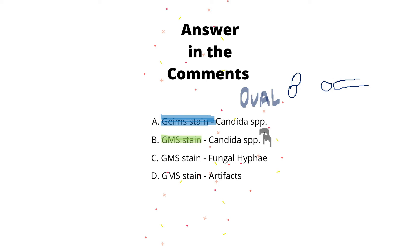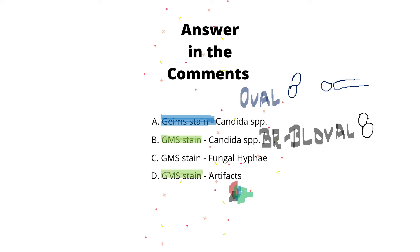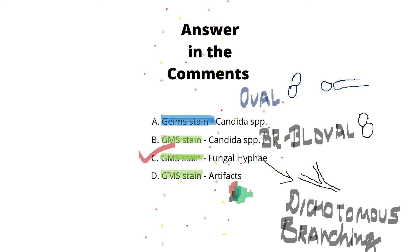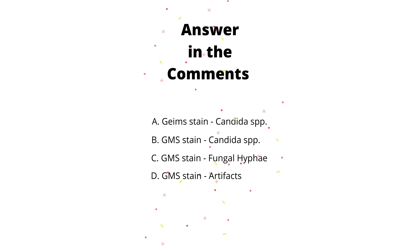With GMS, if Candida is present it shows brown-to-black oval budding yeast cells with pseudohyphae on a green background. Artifacts can appear in any color or shape. In option C, fungal hyphae stain brown to black. In this picture, a peculiar dichotomous branching of septate hyphae is seen, suggestive of Aspergillus. Dichotomous branching means branches arise with equal division from a single terminal bud at an acute angle of around 45 degrees.